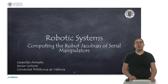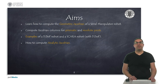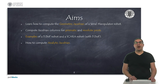Hello. In this presentation I will explain how to compute the robot Jacobian matrix of serial manipulators. The aims of the presentation are, on the one hand, to learn how to compute the geometric Jacobian of a robot. We will see how to compute linear and angular velocities of the end effector given the velocities of prismatic and revolute joints. Later, we will see two examples to compute the robot Jacobian of a robot arm with 3 degrees of freedom and a SCARA robot with 3 degrees of freedom. Finally, I will talk about the analytic Jacobian.